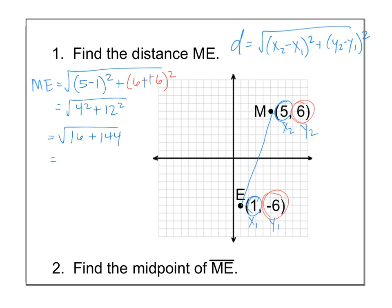If you add those together, I got 160. And the square root of 160 is not a nice number. So you type square root 160 into your calculator and you should get approximately 12.65 units.